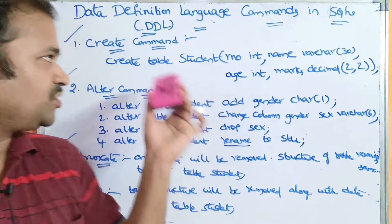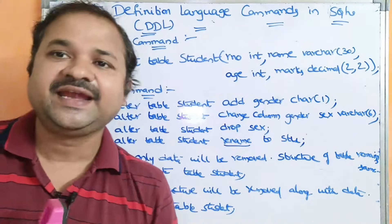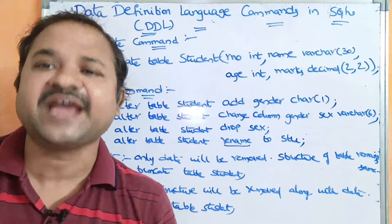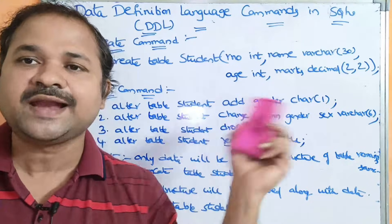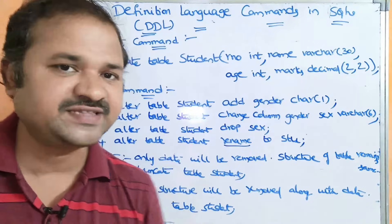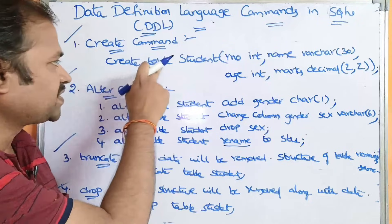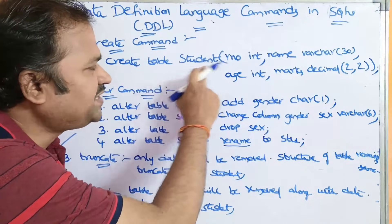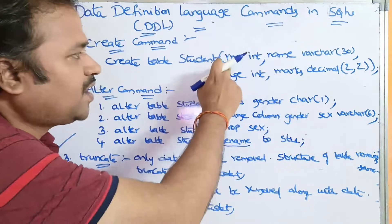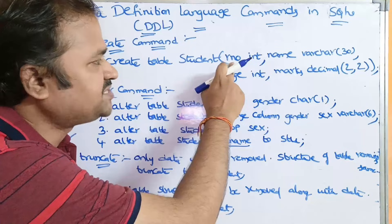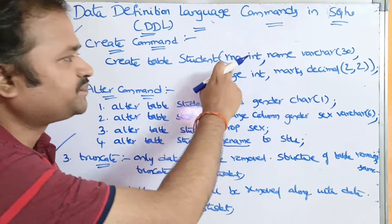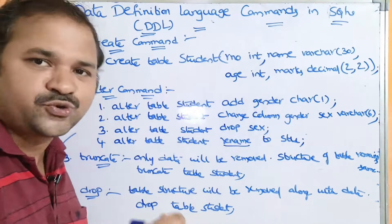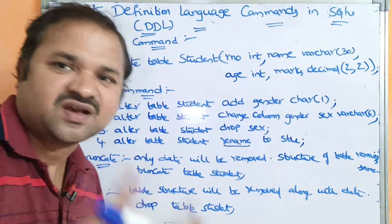First, let us see about the CREATE command. It is mainly useful in order to create a table. Let's see an example. So, CREATE TABLE — let the name of the table be 'student'. The first column is roll number, and roll number is of type integer, so it accepts integer values like 1, 2, 3, 70, 71, 72, and so on.